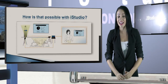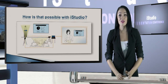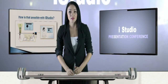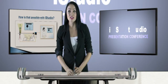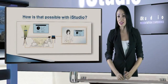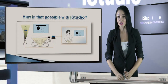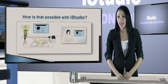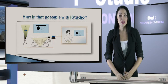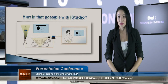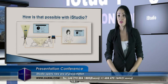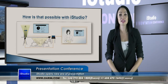How is that possible with iStudio? First, a camera captures a video image of a presenter. Then iStudio combines this video and presentation materials into one single scene. On the other side, another camera captures a video of students or viewers. Therefore, a presenter can see those viewers, and the viewers can see the presenter and presentation materials all together.